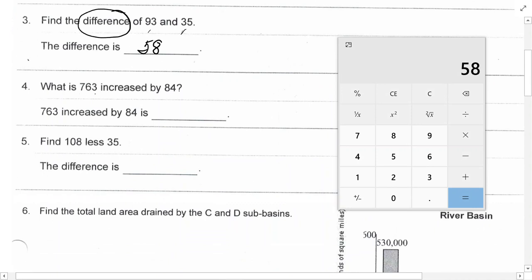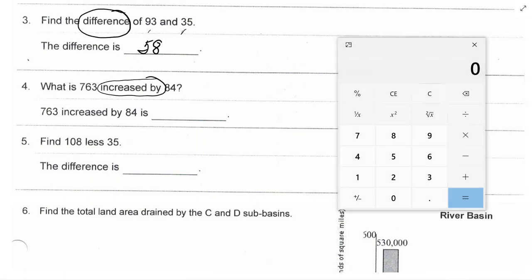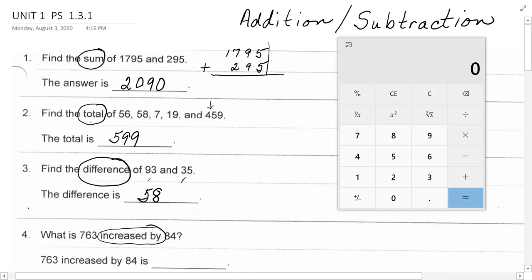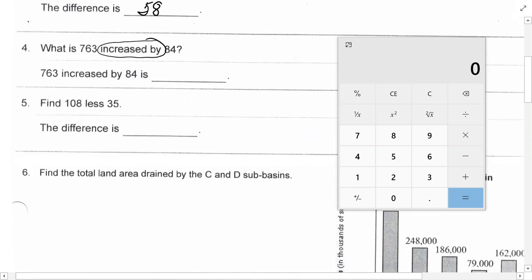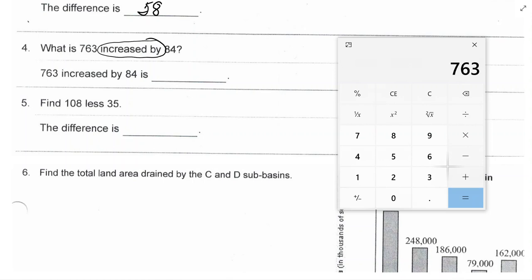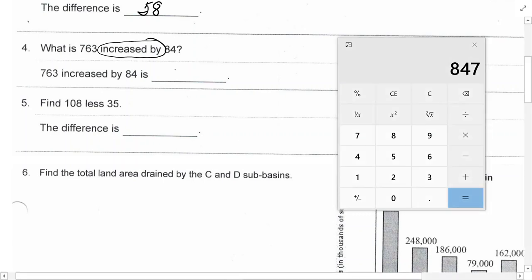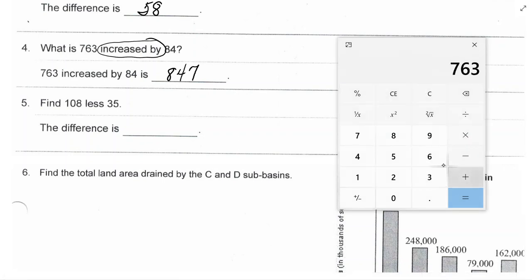Next one. What is 763 increased by 84? Increased by is yet another way to talk about addition. So, maybe it's a good idea to make a list of words and what they indicate. If I were to start back sum and total and increased by all mean addition, difference means subtraction. So, I'm going to take 763, and I'm going to increase it by, which means I'm going to add 84, and I get 847. I could clear it and do it again. 763 plus 84 equals 847.